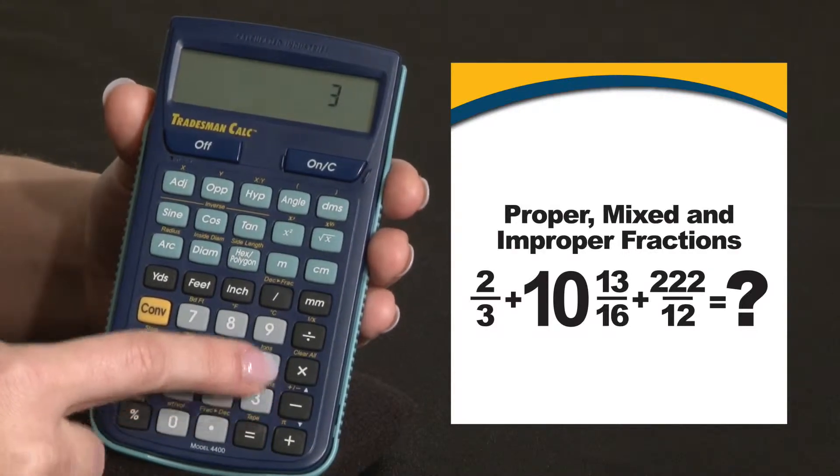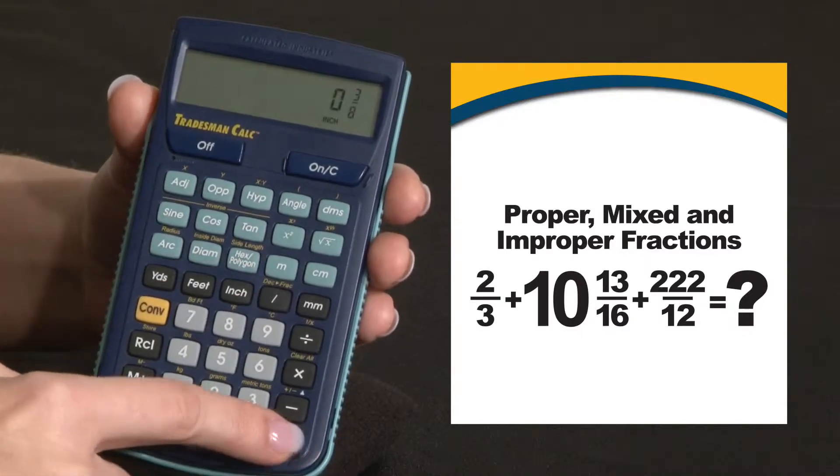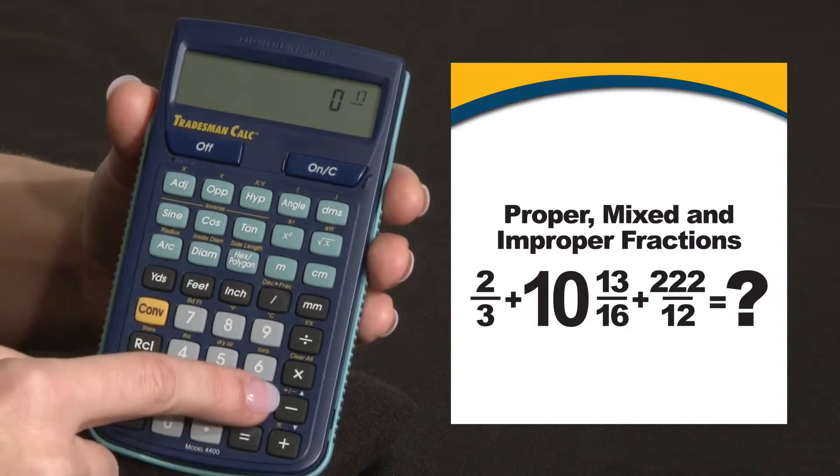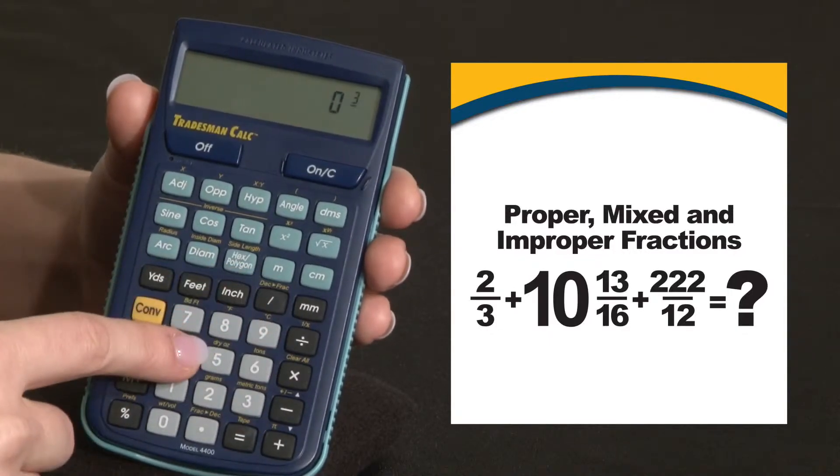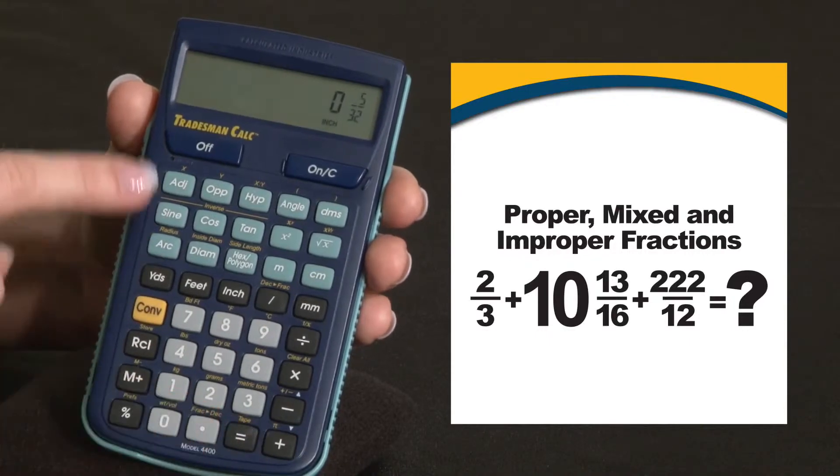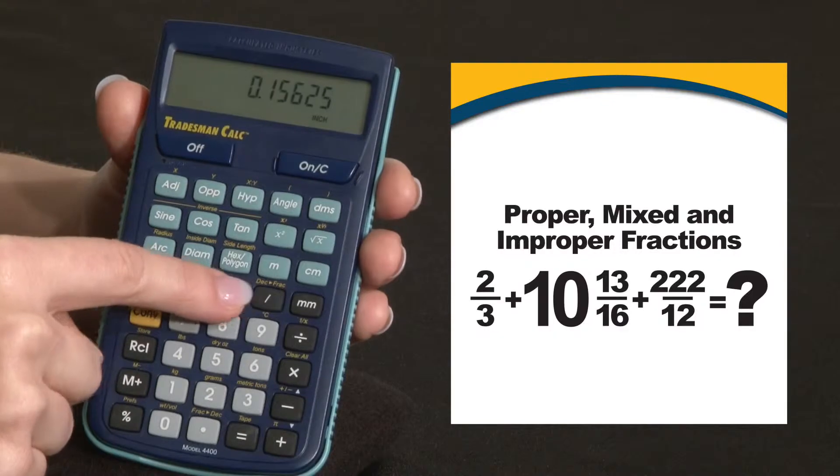For example, three eighths of an inch plus seventeen over thirty two minus three fourths. Our answer is displayed in fractional inches, and we can change that to decimal inches.